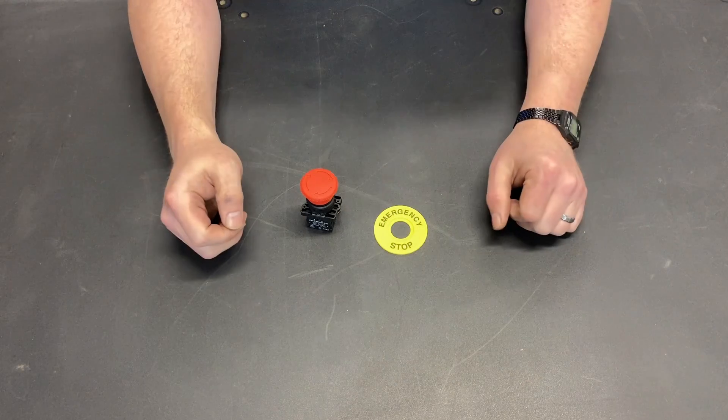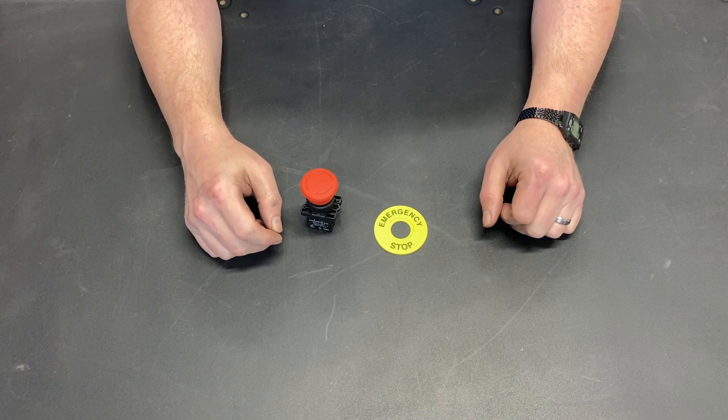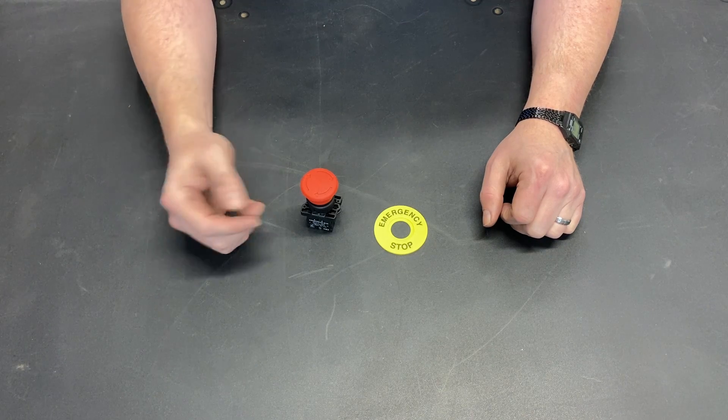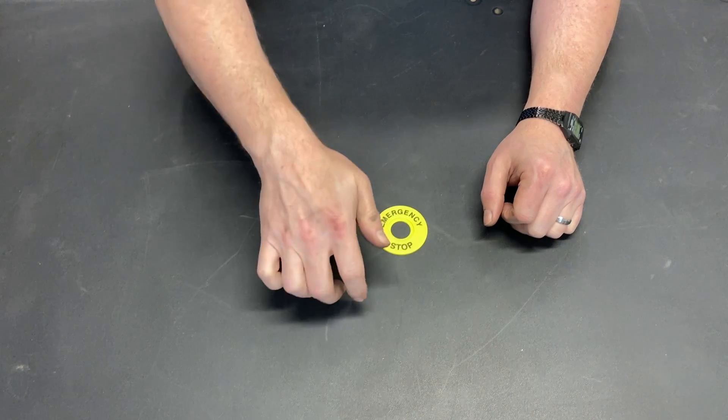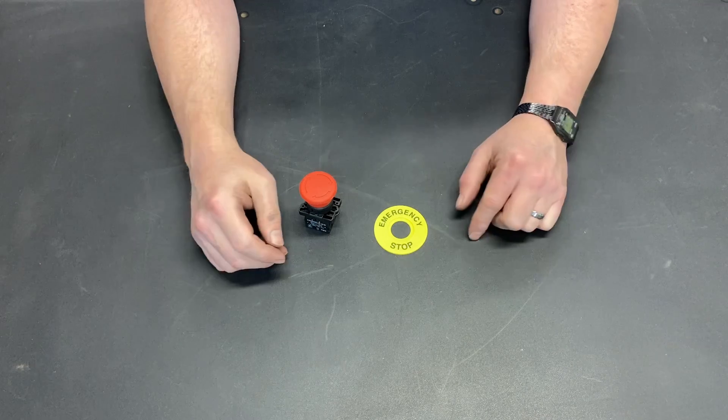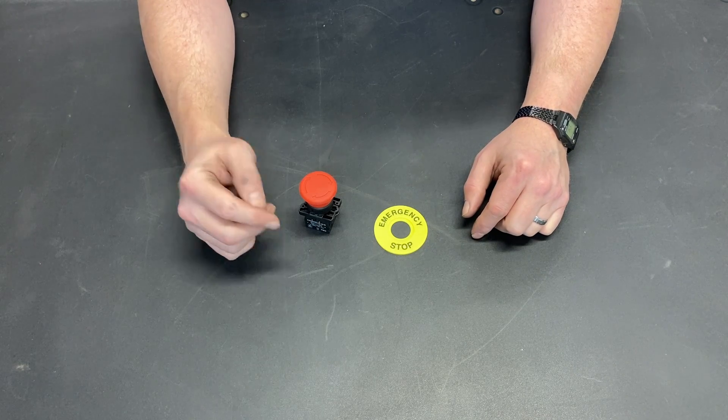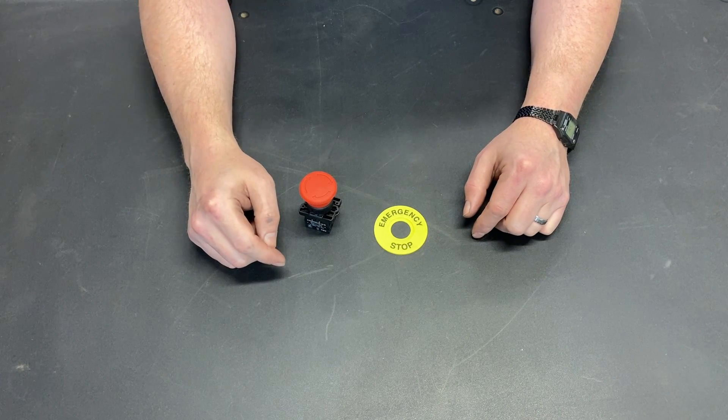Let's talk about stop switches. You'd think it'd be pretty simple. You wire it up to the power. When an emergency happens, you hit the button and everything stops. Turns out to be a little more complicated than that.